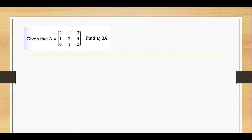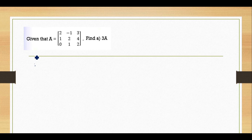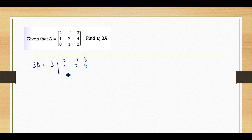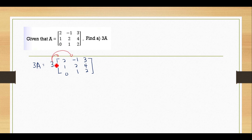Given that A equals this matrix, find 3 multiplied with A. So 3 multiplied with A — we just multiply 3 into each element. Matrix A is: 2, negative 1, 3, 1, 2, 4, 0, 1, 2.